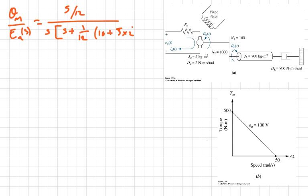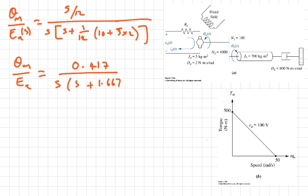So it's 5 times 2. And so this will give us θ_M over E_A(s) equals 0.417 over S times (S plus 1.667). Alright, but we are looking for the relationship between θ_L over E_A(s).